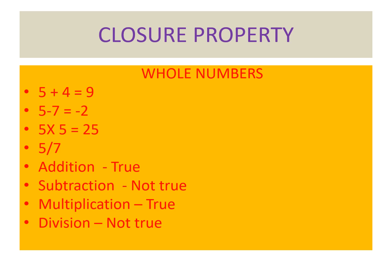For division: 5 ÷ 7 gives a fractional number, so whole numbers are not closed under division. Summary for whole numbers: addition — true; subtraction — not true; multiplication — true; division — not true. You can try more examples with all four basic operations.